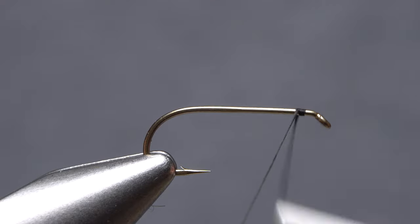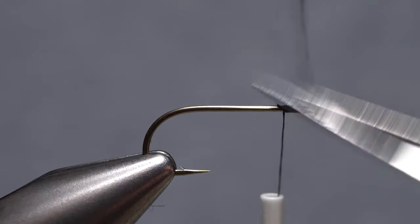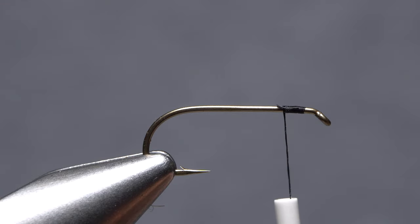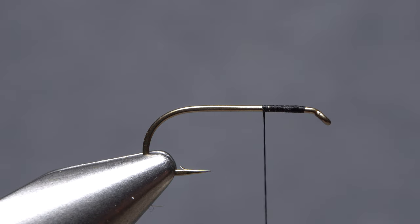Get the thread started on the hook shank, leaving an eye length space behind the eye, and after taking a few wraps rearward, snip off the excess tag. End with your tying thread about one third of the way down the hook shank.